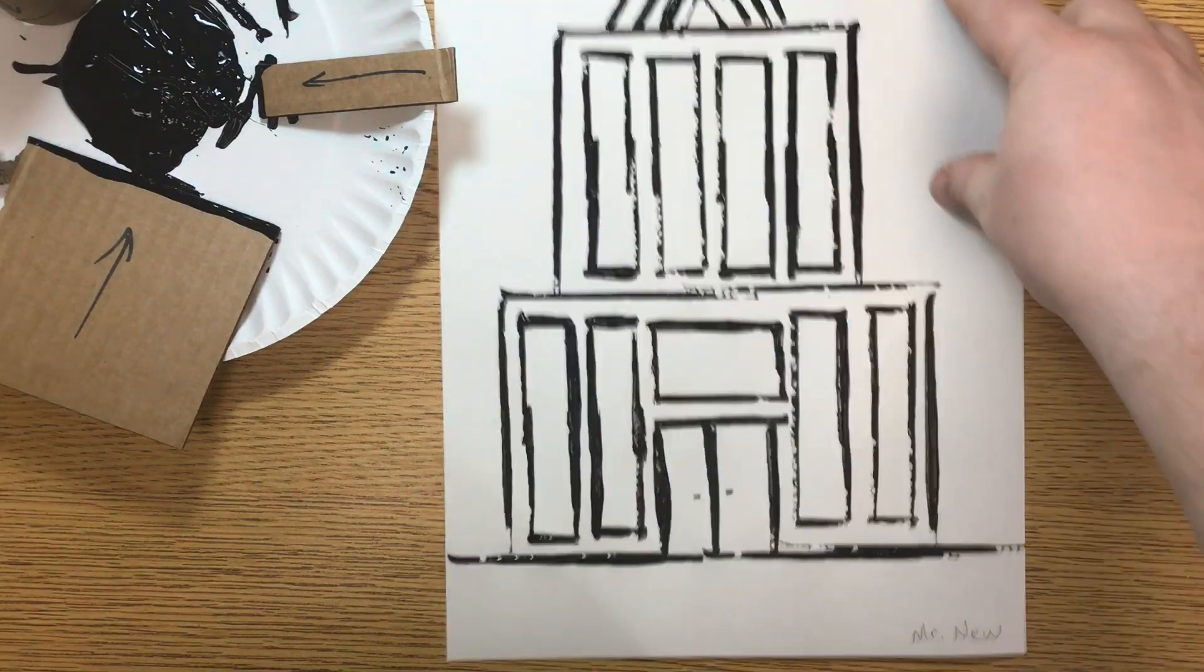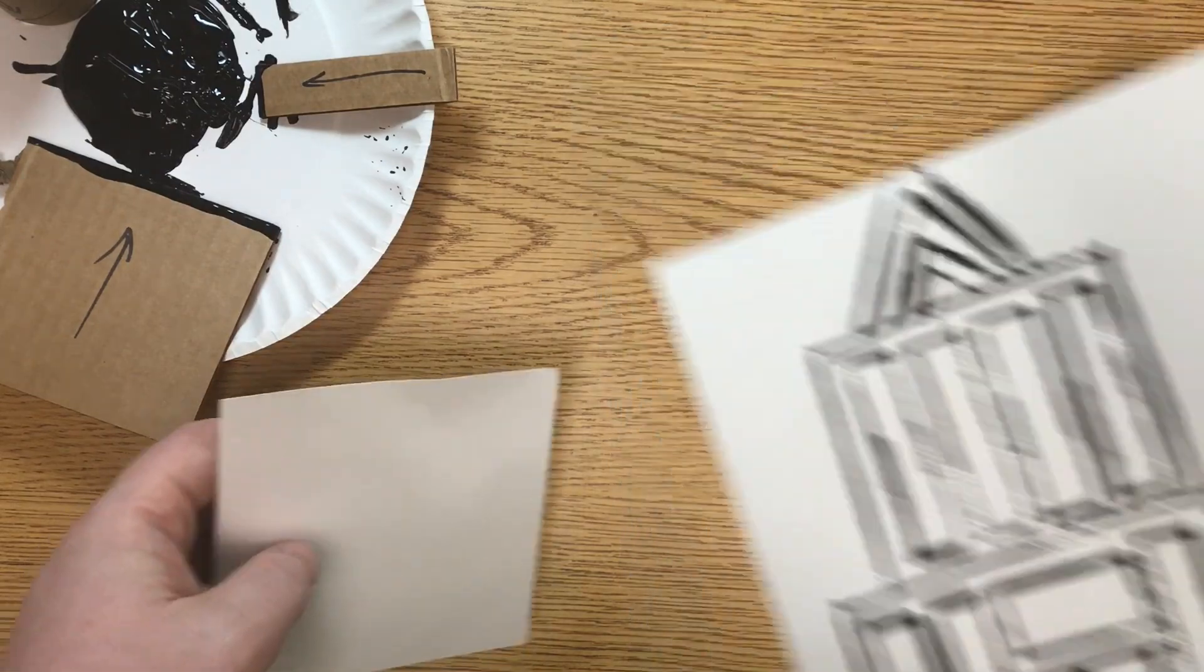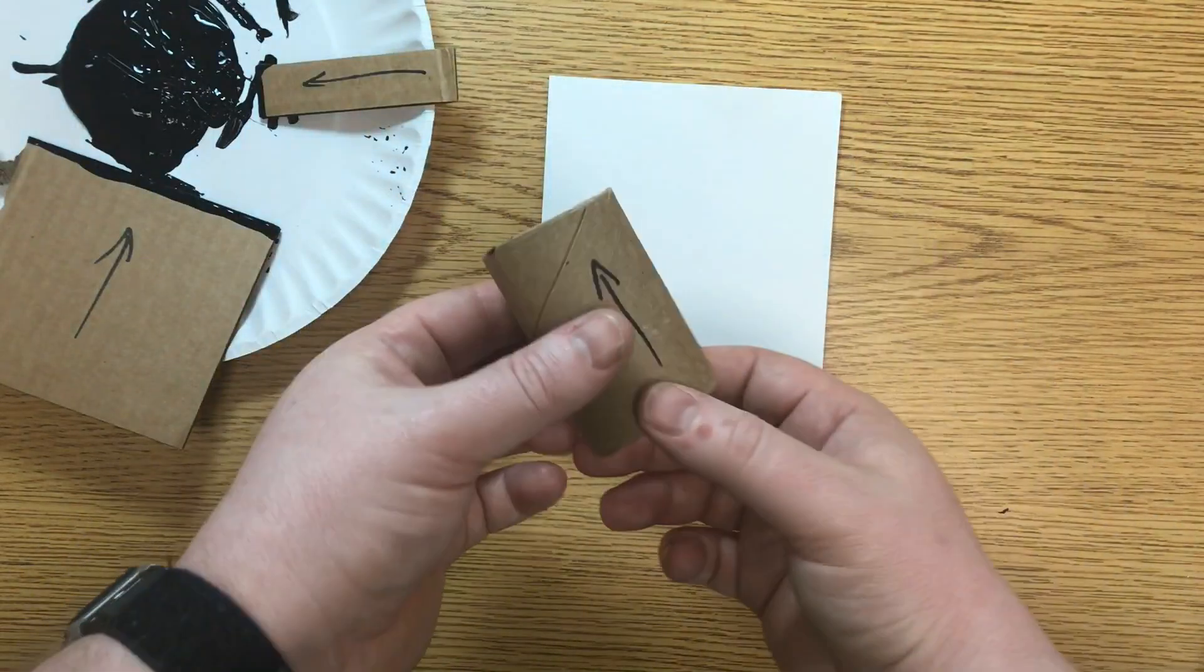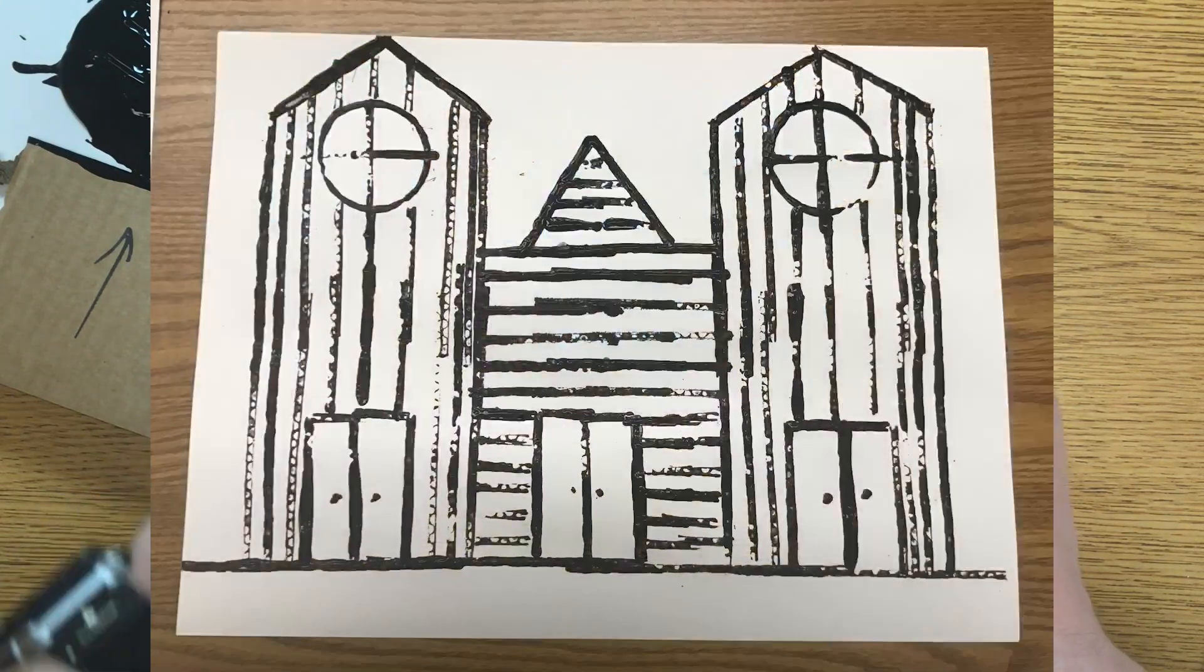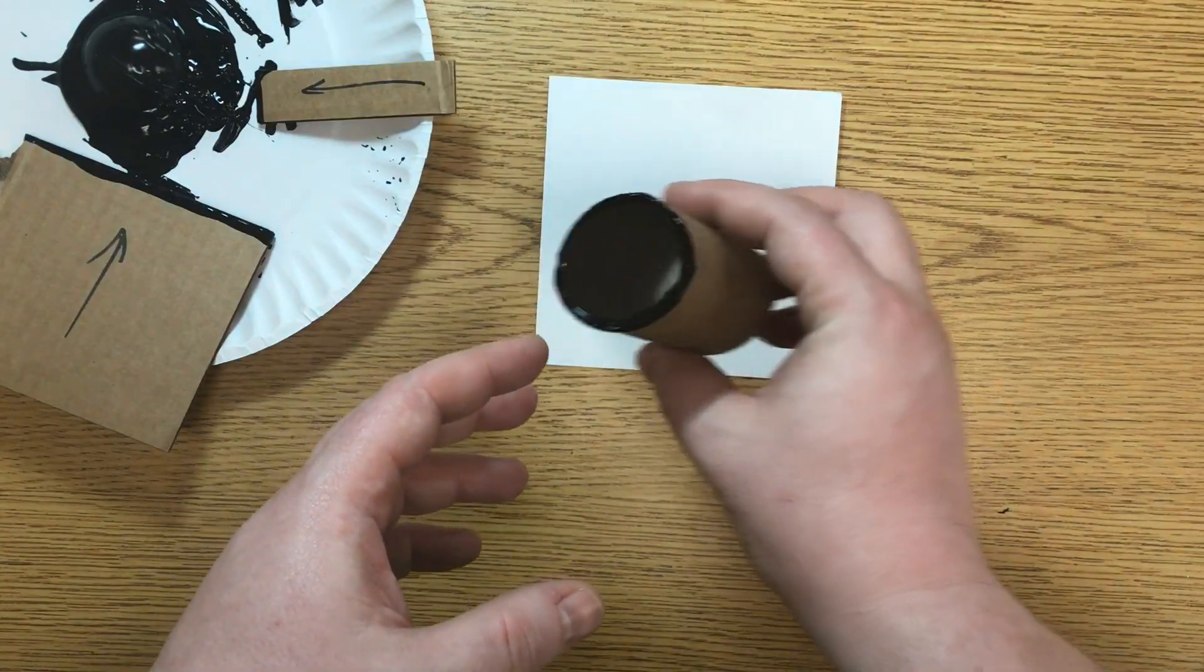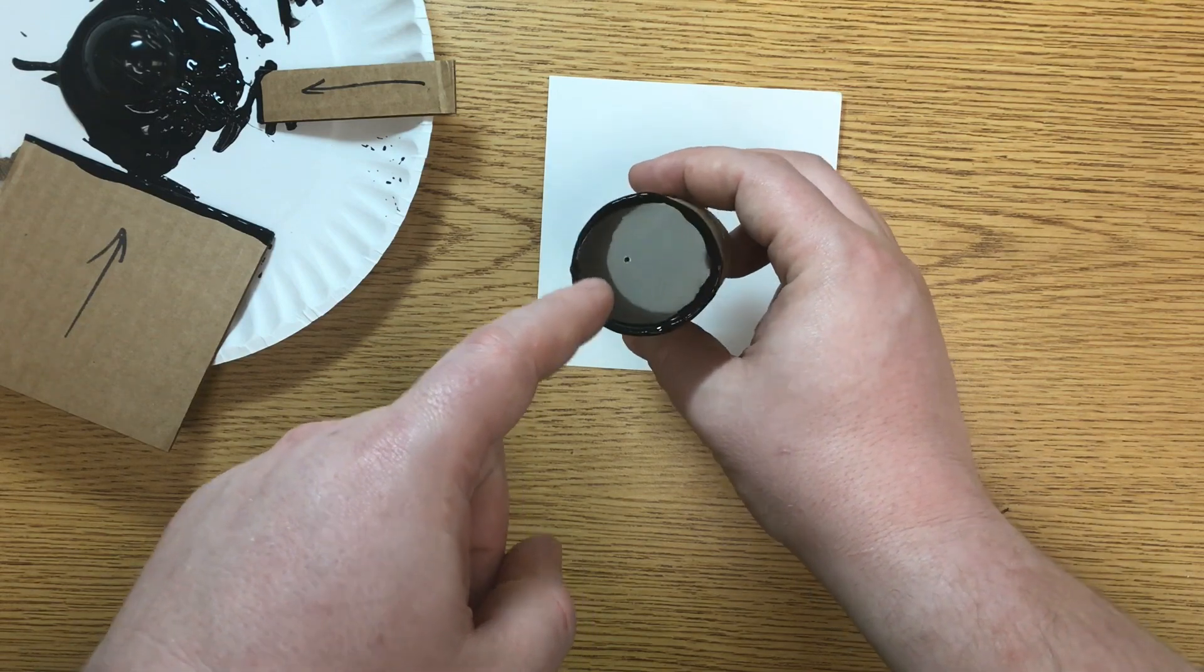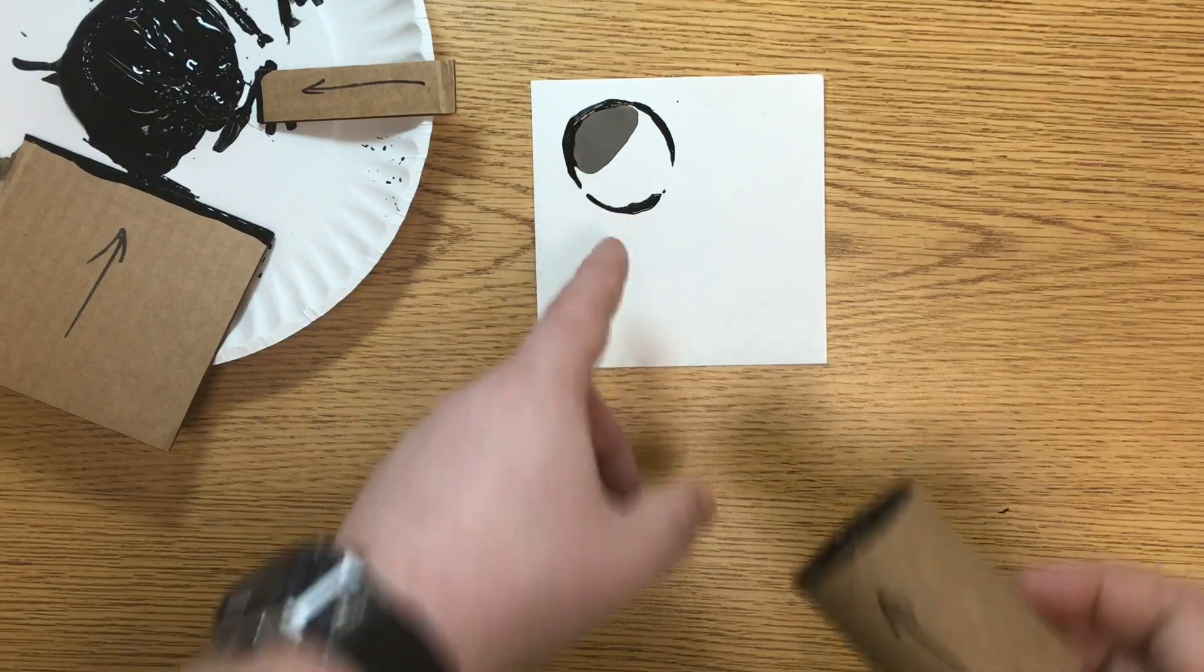Now on this building I didn't use any of the circles but just so you can see what sometimes happens. When you use this to make circles, like if you wanted a circle window, sometimes when you dip this into the paint you get a bubble that forms right here. And if you put that onto your paper it'll pop like this.